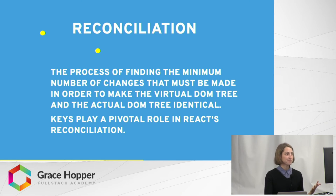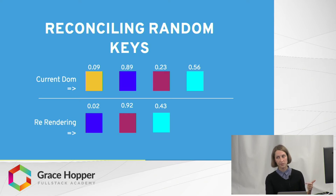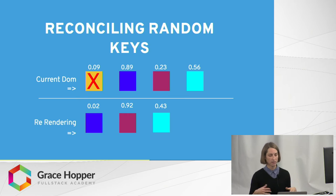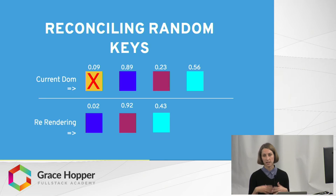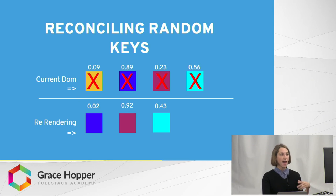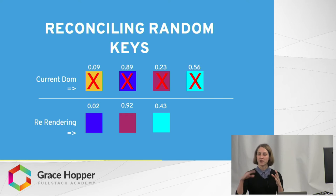Right now our key is Math.random. When the user clicks and deletes an element, React goes and looks for a key value in the new DOM — say 0.09. It doesn't find it because we're using Math.random; every time it re-renders, each element gets a brand new random key. When it doesn't find that key value, it just assumes that element's gone and deletes the node. This continues all the way through the array — it doesn't find matching keys, so it has to create brand new elements to re-render. That's why we're seeing almost 8,000 DOM operations to delete one element.